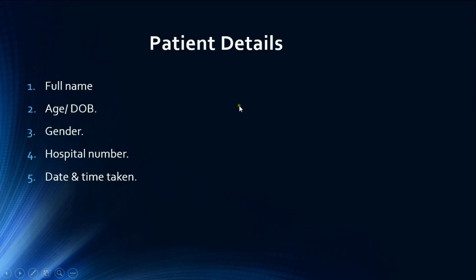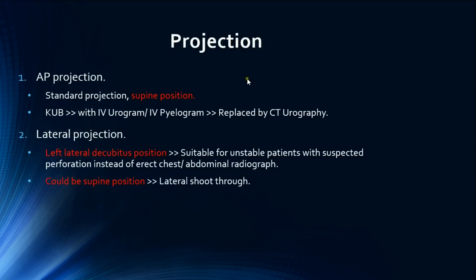Step one is patient details: full name, age, gender, hospital number, date, and time the radiograph was taken. The next step is to check the projection of the abdominal radiograph.